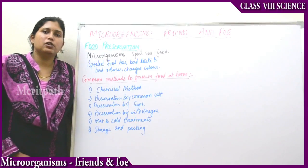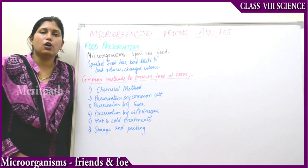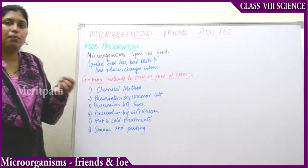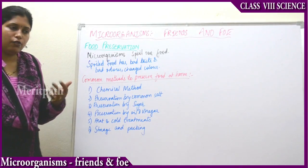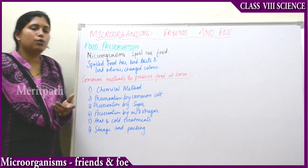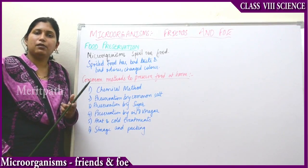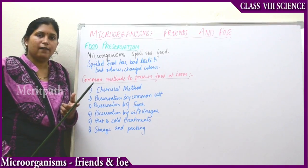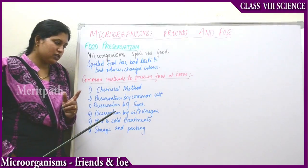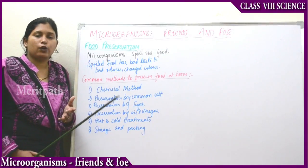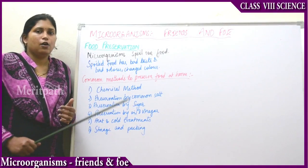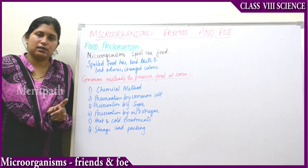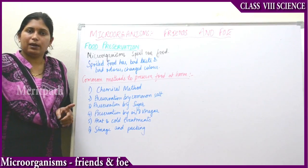Next is heat and cold treatments. For heat treatment, milk is boiled — after the milk reaches boiling point at 100 degrees centigrade, boiling it for 2 to 3 minutes preserves the milk by killing all the microorganisms. Boiling the milk kills the microorganisms in it.